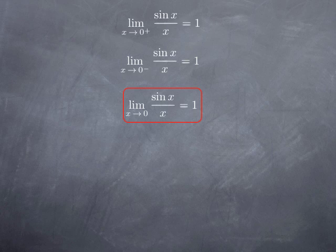This limit can be used to calculate other limits. For instance, if we want to calculate the limit at 0 of sin(5x) divided by sin(3x), we would like to have sine of an angle divided by that same angle. We can divide sin(5x) by 5x to get that type of expression — sine of an angle over the same angle as that angle approaches 0.